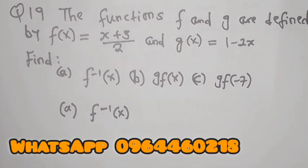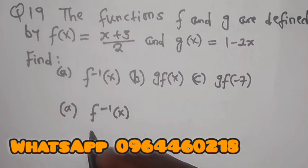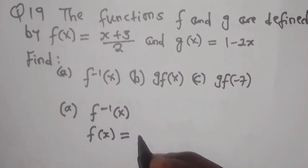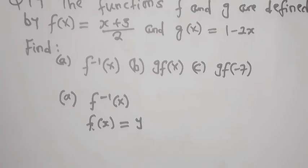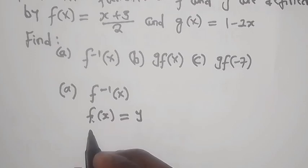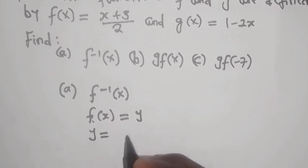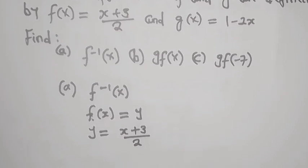So what this means is that whenever you are finding the inverse, you say f(x) is equal to, let's say y. And then meaning what is f(x), I'm going to put y. So now this implies that y is equal to x plus 3 over 2.